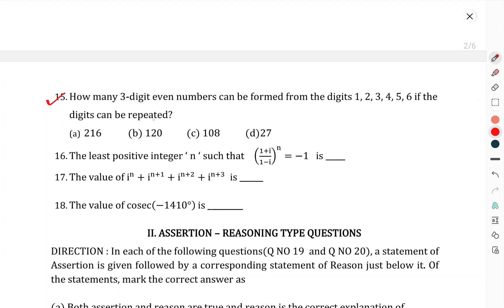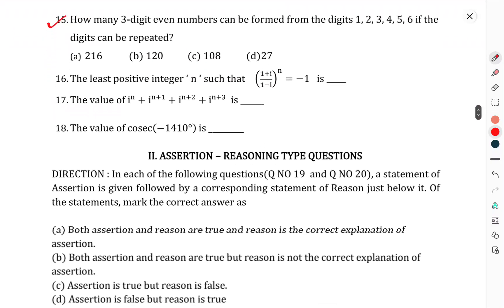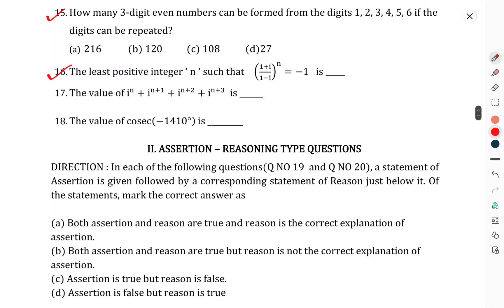Question number 13: The graph of the solution of the given inequality on the number line is - which option is correct? Question number 14: The sum of the exponents of x and y in the expansion of (x + y) raised to power n is. Question 15: How many 3-digit even numbers can be formed from the digits 1, 2, 3, 4, 5, 6 if the digits can be repeated? Question number 16: The least positive integer n such that... Question 17: The value of iota raised to power n, iota raised to power n+1, iota raised to power n+2, iota raised to power n+3 is. Question 18: The value of cos(-1410 degrees) is.